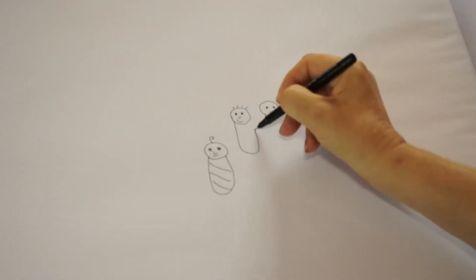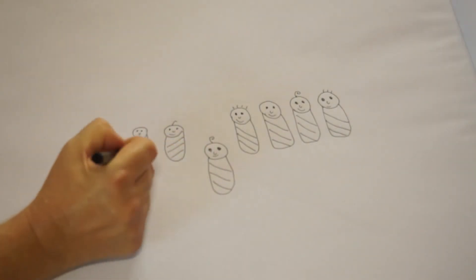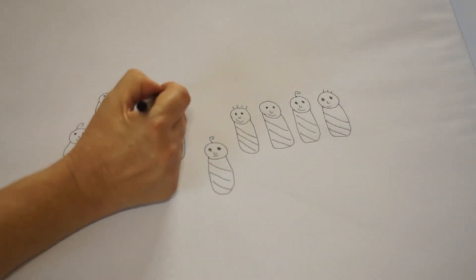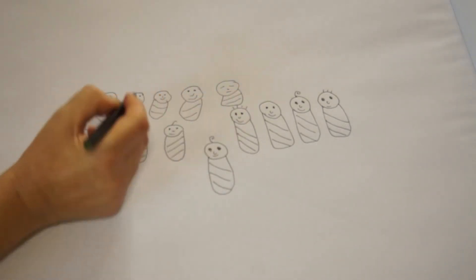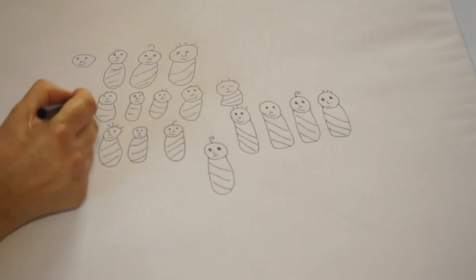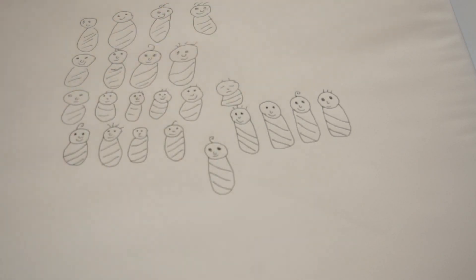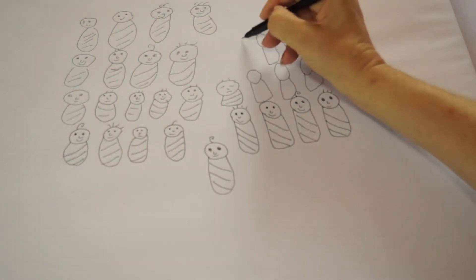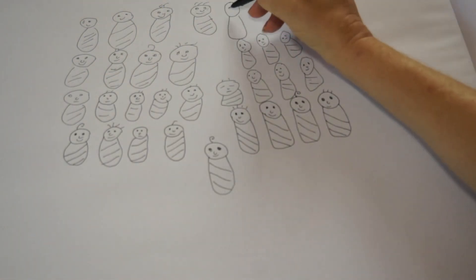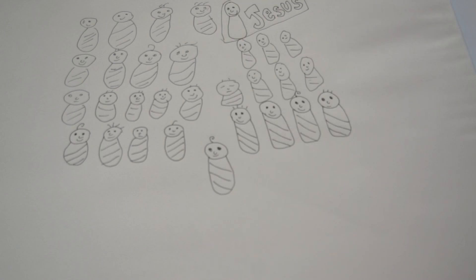Isaac grew up and had children. His children had children, and his children's children had children. Later, Jesus our Lord was born into this family.